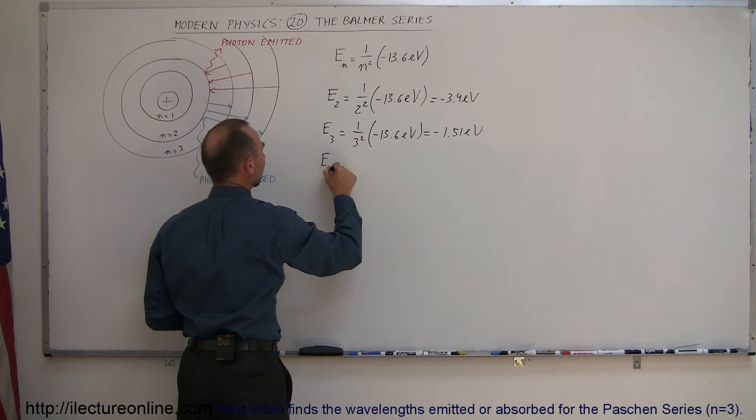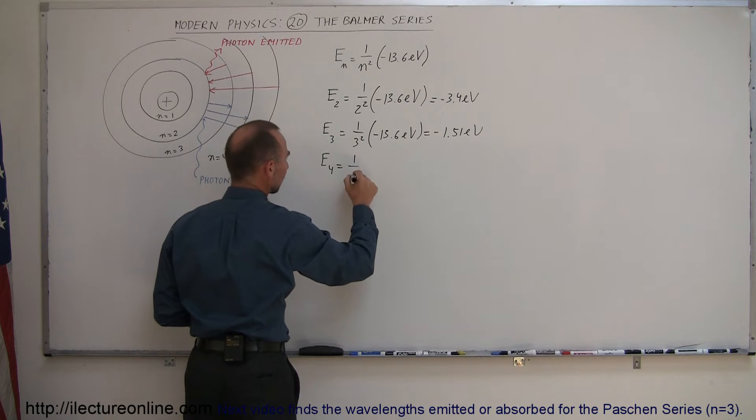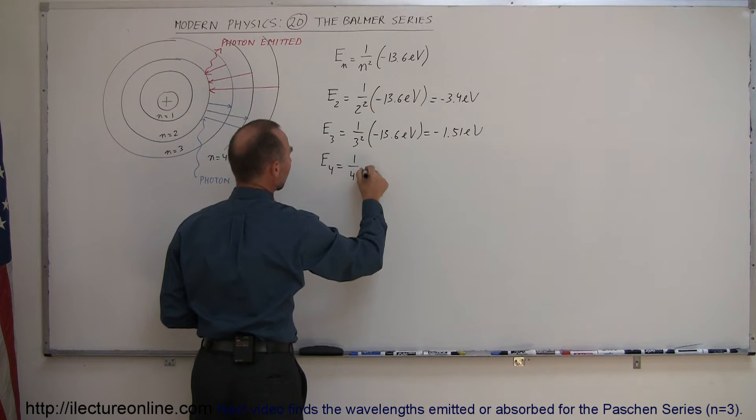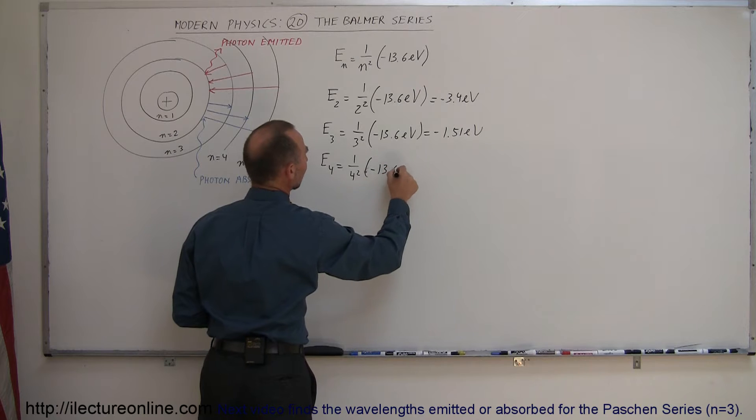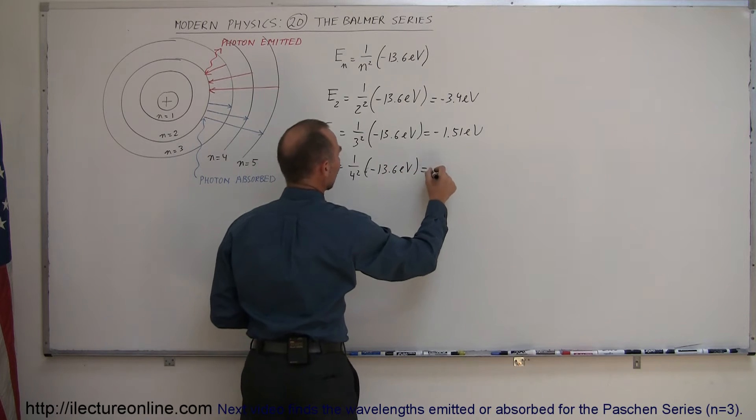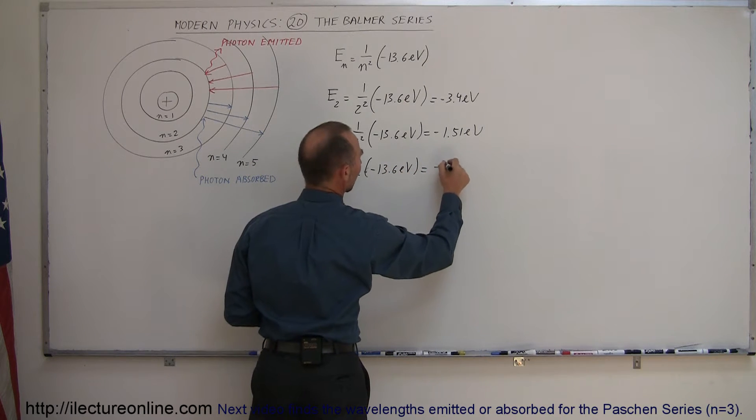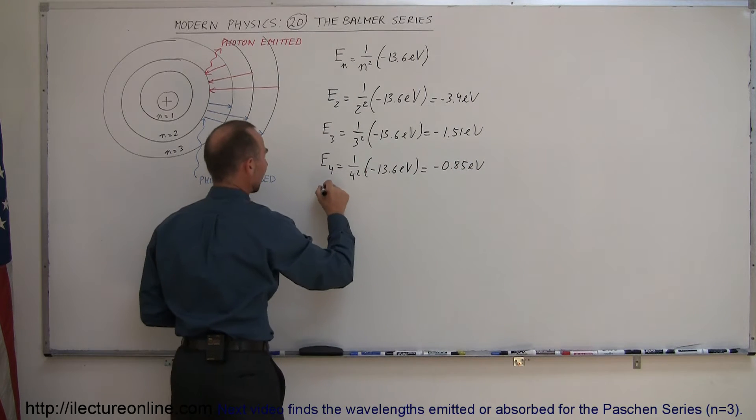The jump to the fourth level is equal to 1 over 4 squared times minus 13.6 electron volts, which is minus 0.85 electron volts.